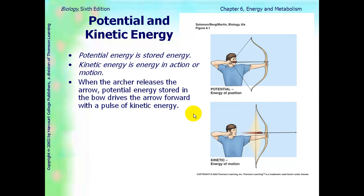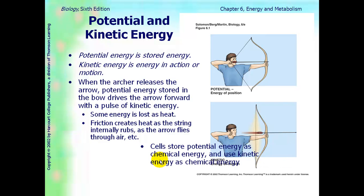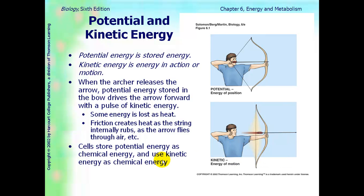When the archer is releasing the arrow, potential energy that is stored in the bow drives the arrow forward with the pulse of kinetic energy. Some of the energy is lost as heat. And then cells will store this potential energy as chemical energy in the form of ATP.